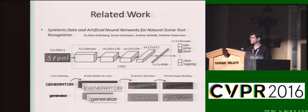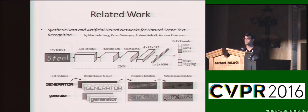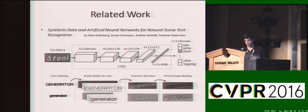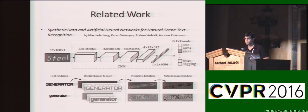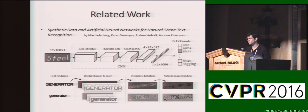To train their network, they generated approximately 9 million images by rendering the entire lexicon with various fonts, colors, borders, and projections. They got state-of-the-art results on scene text recognition, but unfortunately their method cannot be used for handwriting recognition because synthetic font lacks the full variability which handwriting text possesses.